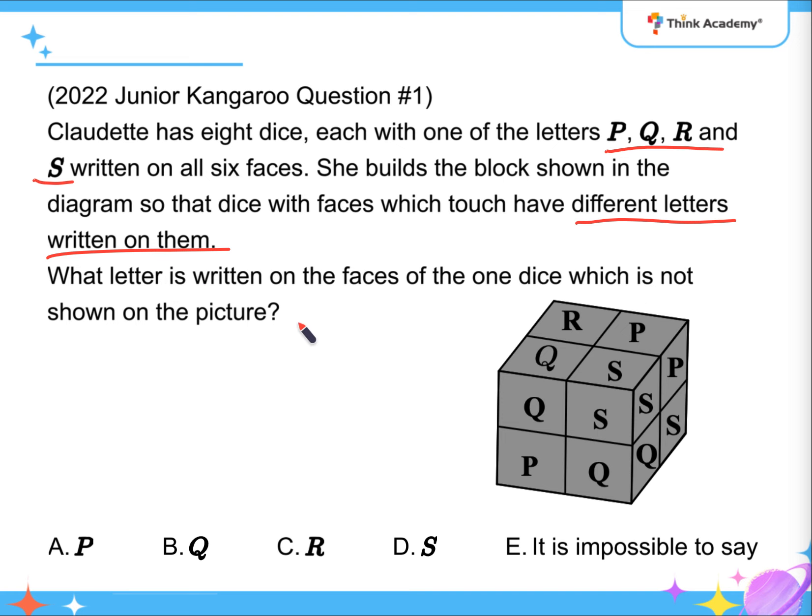First of all, we need to know which dice is not shown. It should be the one behind, which is beneath R, to the back of P, and basically it's going to be that one on the left of S, right?